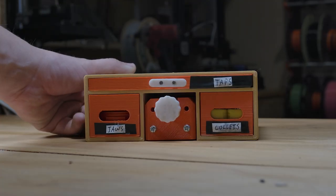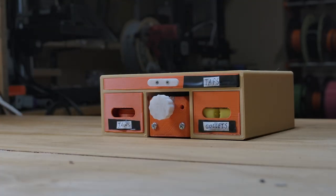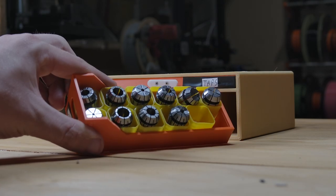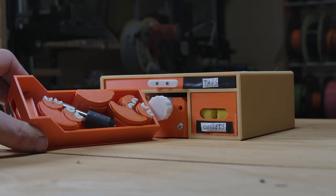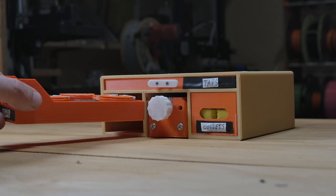The final addition to the design was to make a storage case to keep everything in order, like taps, collets, and alternate vice drawers for holding different types of parts.